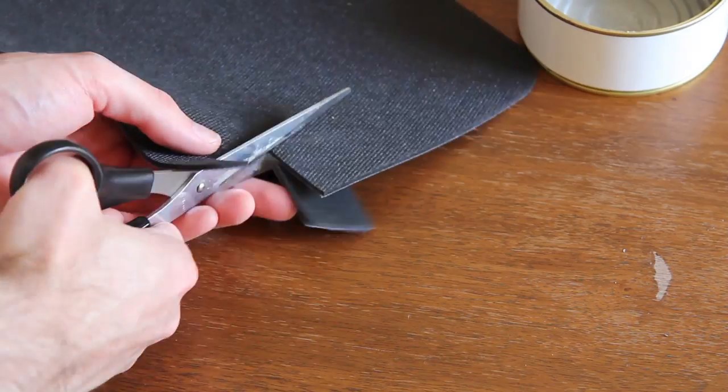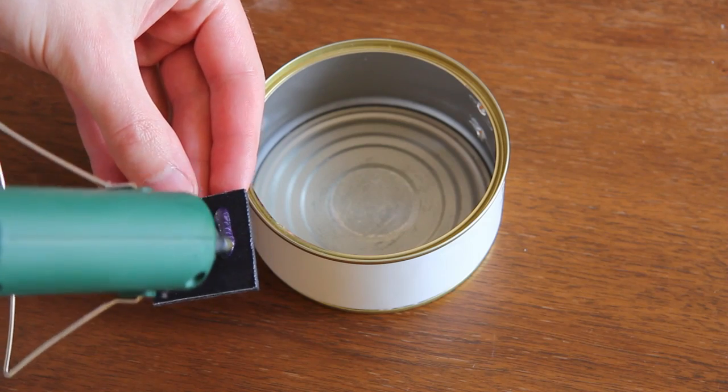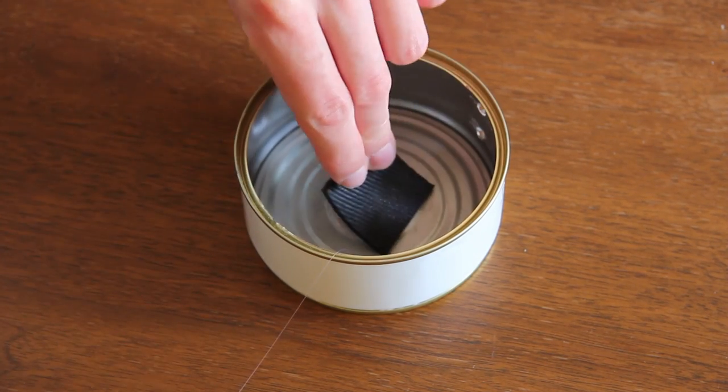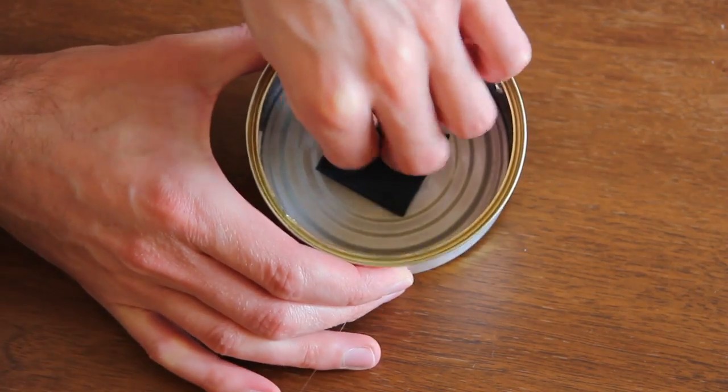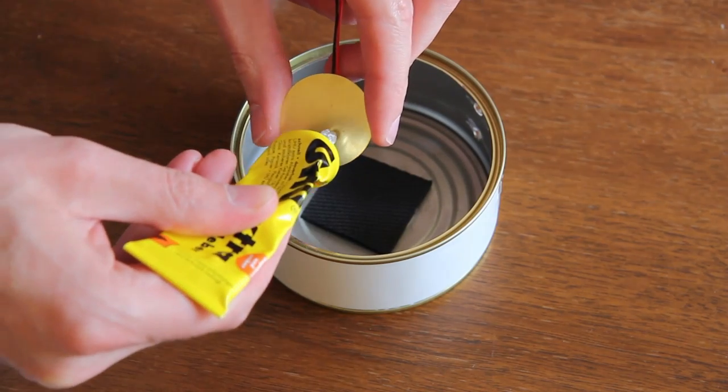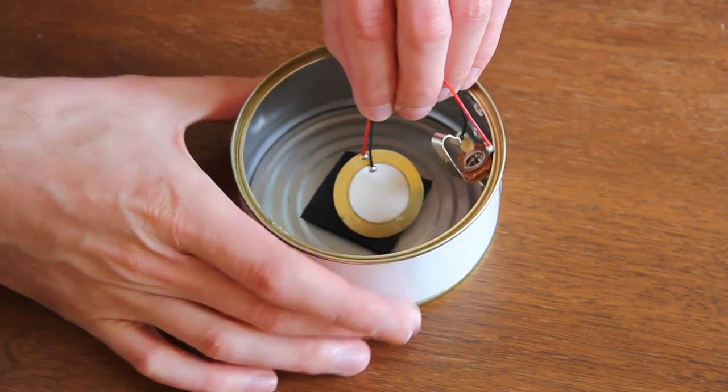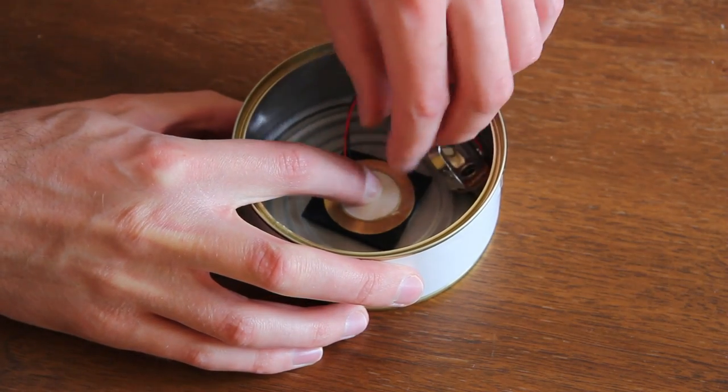Cut out the piece of rubber in the size of your trigger. Use hot glue to attach it onto the bottom of the can. Now use normal glue for the trigger to not overheat it. The rubber will isolate the trigger from direct hits.